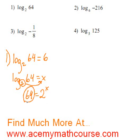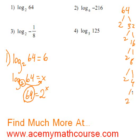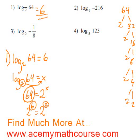At this point, we can take a look at 64. We could make a factor tree if we're in doubt about how many 2's go into 64. So: 64 divided by 2 is 32, divided by 2 is 16, divided by 2 is 8, divided by 2 is 4, divided by 2 is 2. That gives us 2 to the power of 6. And since 2 to the power of 6 equals 2 to the power of x, x is 6. That's the value — 6 is the value of log base 2 of 64.